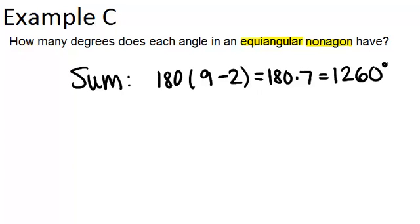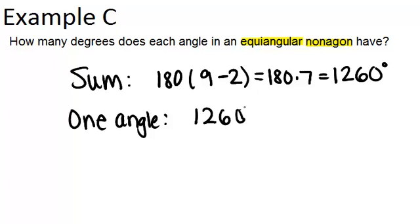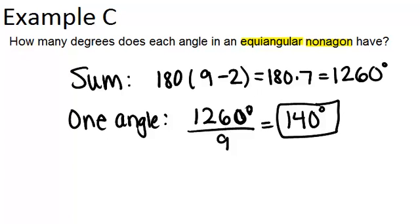So the sum of the angles is 1,260 degrees. That means each angle, or one angle, is going to be that sum divided by 9 because there are nine congruent angles there. So we're going to do 1,260 divided by 9, and we get 140 degrees. So our answer is that each angle in the nonagon is 140 degrees.